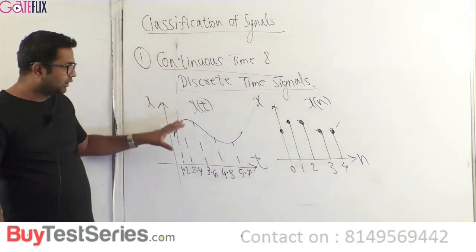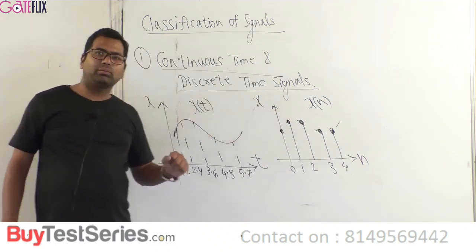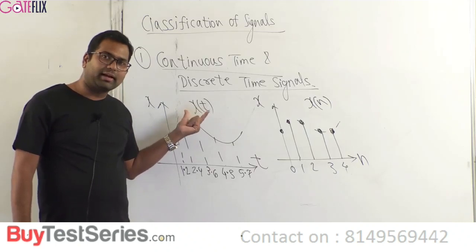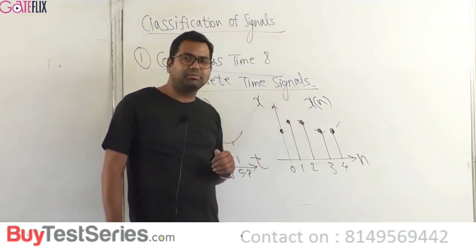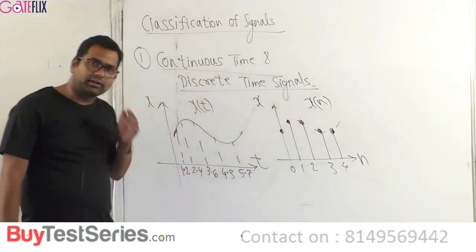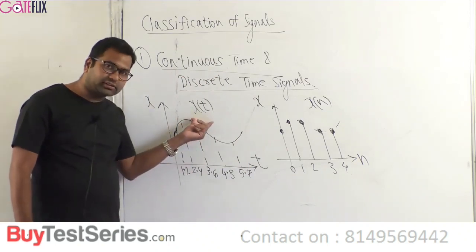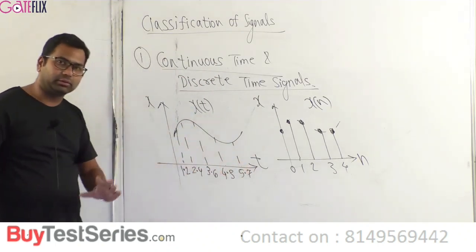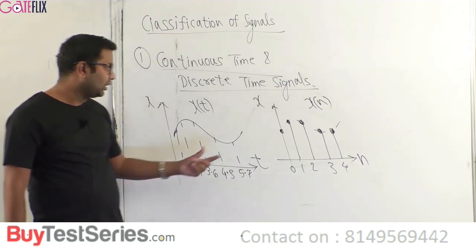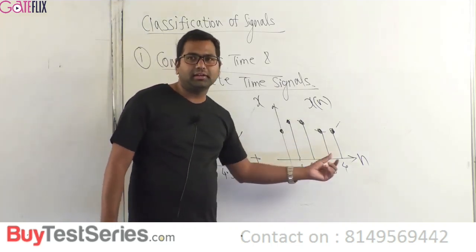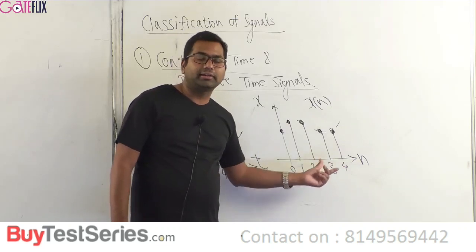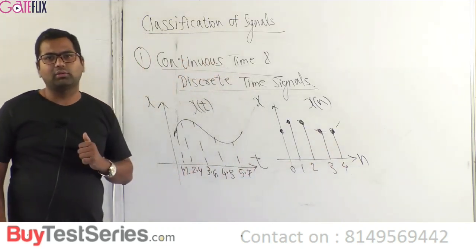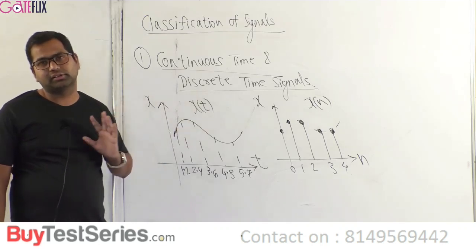To summarize continuous time and discrete time signals: a continuous time signal is denoted by x(t); a discrete time signal is denoted by x(n). In continuous time, t can take any value with no binding. In discrete time, n can take only integer values.